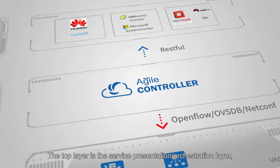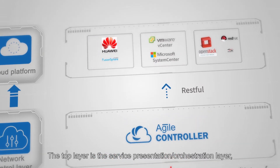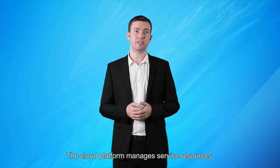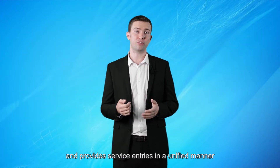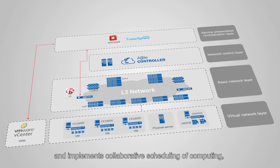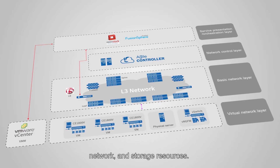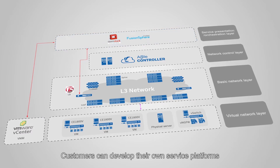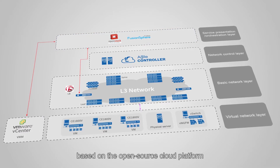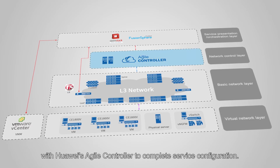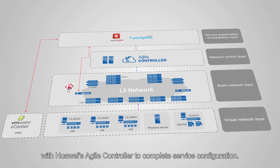The top layer is the service presentation orchestration layer, at which a cloud platform is deployed. The cloud platform manages service resources and provides service entries in a unified manner and implements collaborative scheduling of computing, network, and storage resources. Customers can develop their own service platforms based on the open source cloud platform, and interconnect the self-developed service platforms with Huawei's Agile controller to complete service configuration.